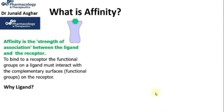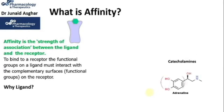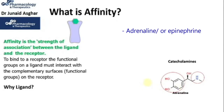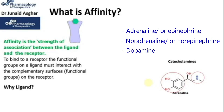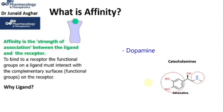Let's take the example of adrenaline, which is a catecholamine. The catecholamines contain a catechol ring, which is a benzene ring with two adjacent hydroxyl groups, and also possess an amine group in the side chain. Adrenaline and noradrenaline are two well-known catecholamines. The other noteworthy catecholamine is dopamine, which is a neurotransmitter that determines several behaviors in the brain.